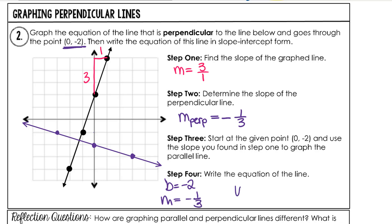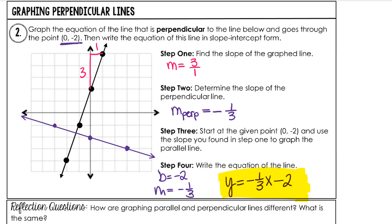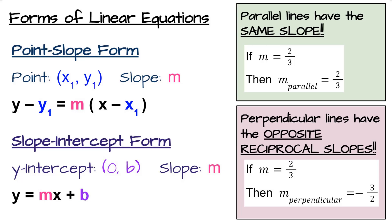The y-intercept of this line is negative 2 and the slope is negative 1 third. So our slope-intercept form would be y equals negative 1 third x minus 2. And there is our equation of a perpendicular line to the one given in the graph. In conclusion, slope-intercept form is y equals mx plus b, and point-slope form is y minus the y part of the point equals m times (x minus the x part of the point). Use point-slope form when you're given a point and a slope.